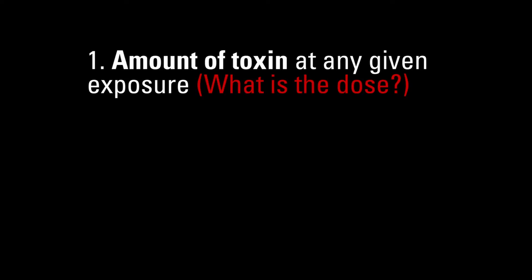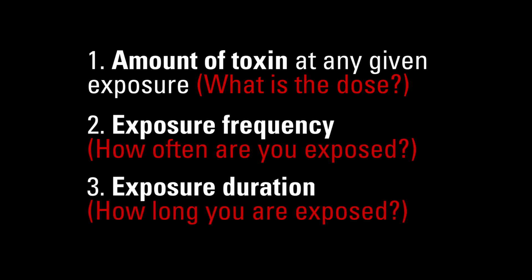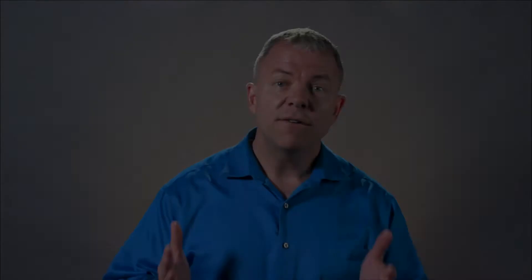So how do we determine just how risky a food-related toxin might be? Risk is directly related to exposure. Exposure is the product of three factors: the amount of toxin at any given exposure, exposure frequency, and exposure duration. For chemical toxins there is a minimum dose required to cause harm. The more frequently we're exposed to that harmful dose — every week, every day, or multiple times per day — the more likely harm will result. Longer exposures over hours or days versus minutes or seconds also increase the chance of harm.